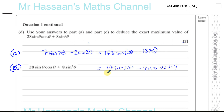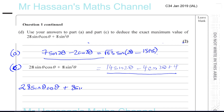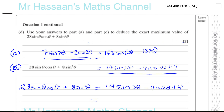We can see that this is very closely related to the Part A result. So, 28 sine theta cosine theta plus 8 sine squared theta equals 14 sine 2θ minus 4 cosine 2θ plus 4. Comparing these two, 14 is 2 times 7 and 4 is 2 times 2, so I can take out a factor of 2 from those first two terms.